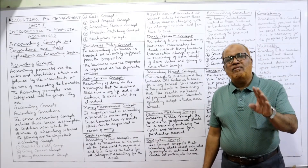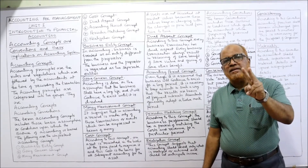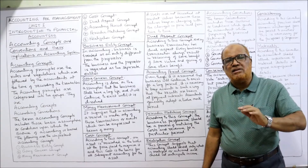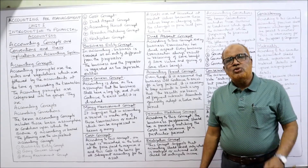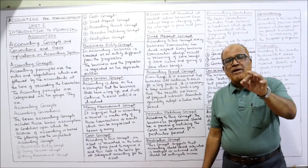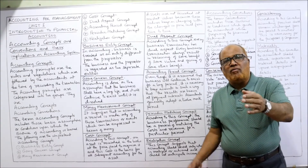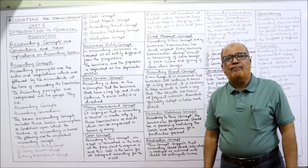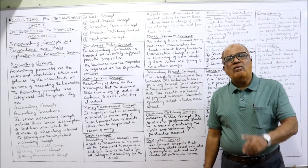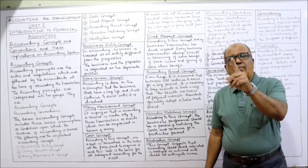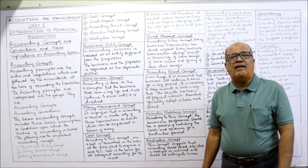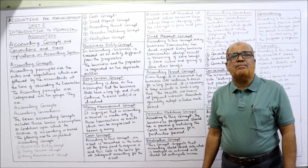Next is the dual aspect concept. Dual means two — every transaction will have two aspects: something given and something received. Both aspects should be recorded. What we are getting and what we are giving — that is why one account is debited and the other is credited. This is the double entry system, and that is the dual aspect concept.